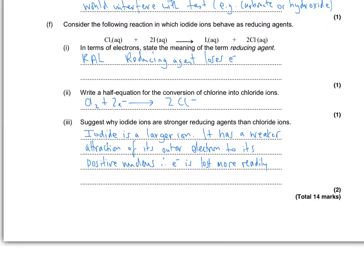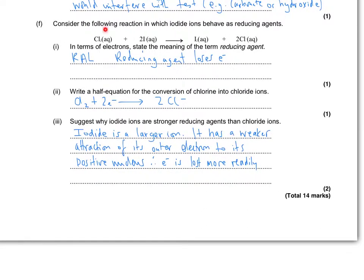Now we've got the displacement reaction. So this is chlorine reacting with iodide ions. To find the term reducing agent, reducing agent loses electrons. It loses electrons to the oxidizing agent. So in this case, it is the iodide which is losing its electrons. It's going minus 1 to 0. Write a half equation for the conversion of chlorine into chloride. Chlorine, chloride, plus 2 electrons to balance. So it's 2 minus there, so it's 2 minus there. Suggest why iodide ions are stronger reducing agents than chloride ions. Iodide is a larger ion, a larger ionic radius. It has a weaker attraction of its outer electron, because it's a bigger ion. So its electrons are lost more readily.